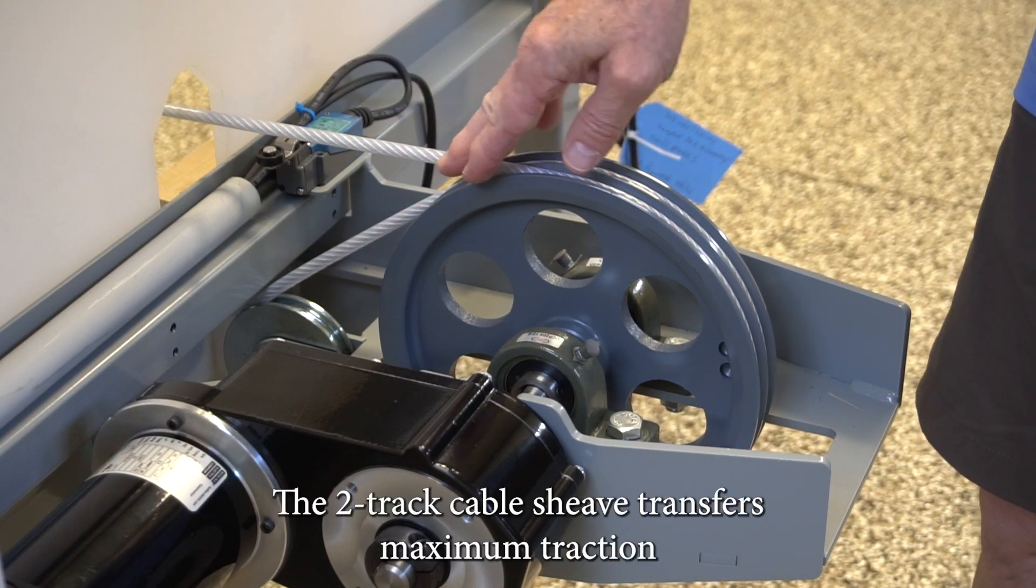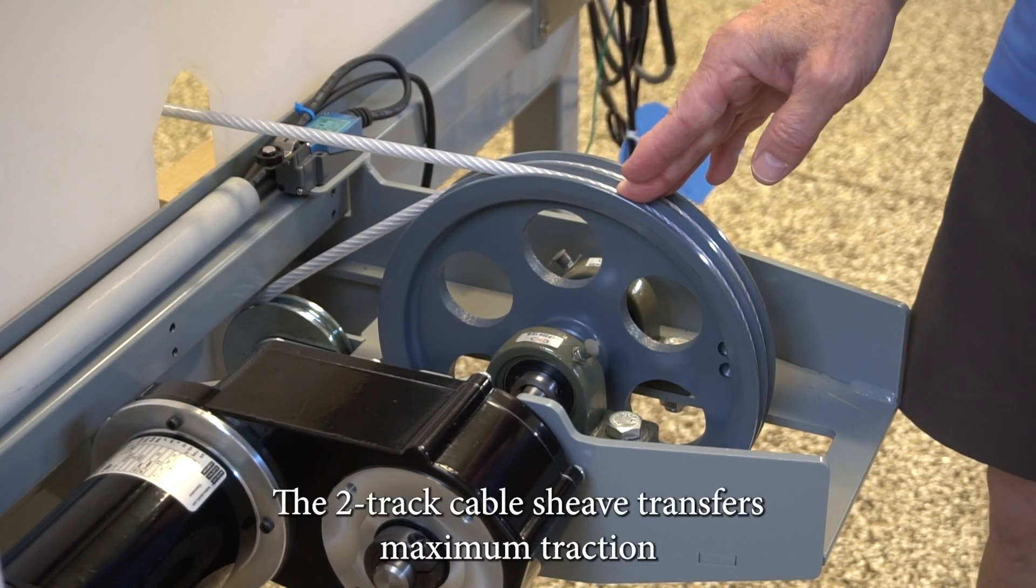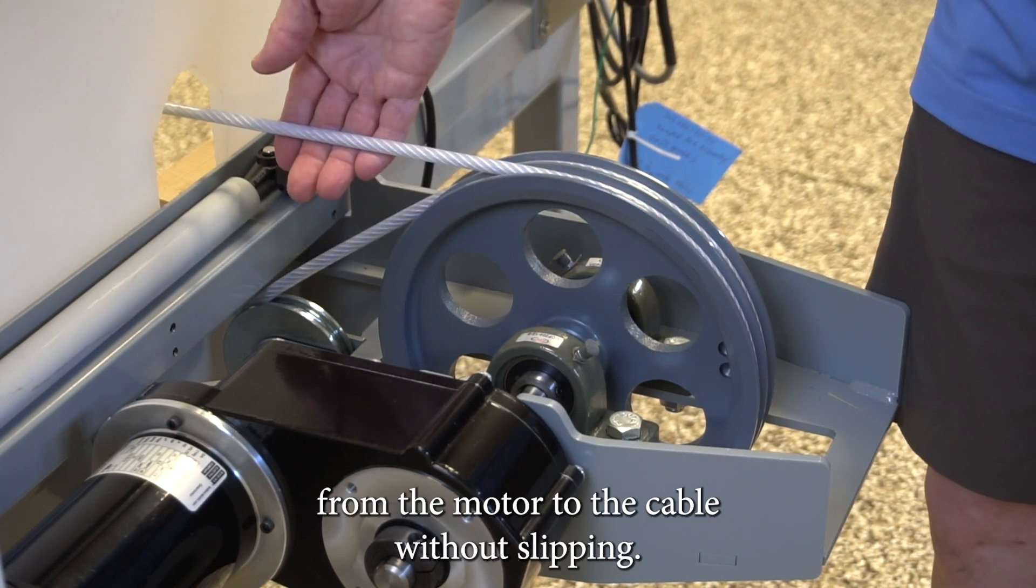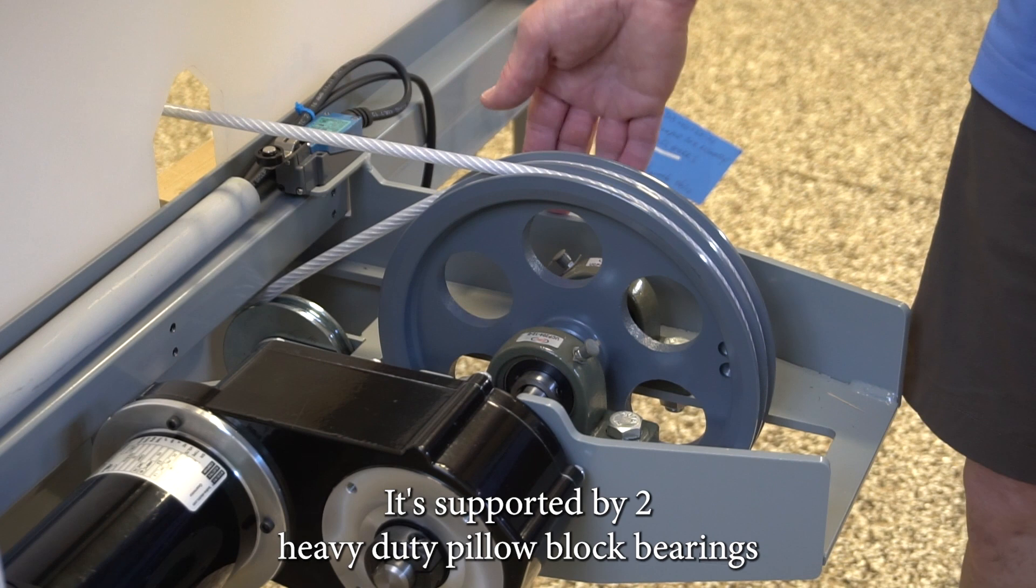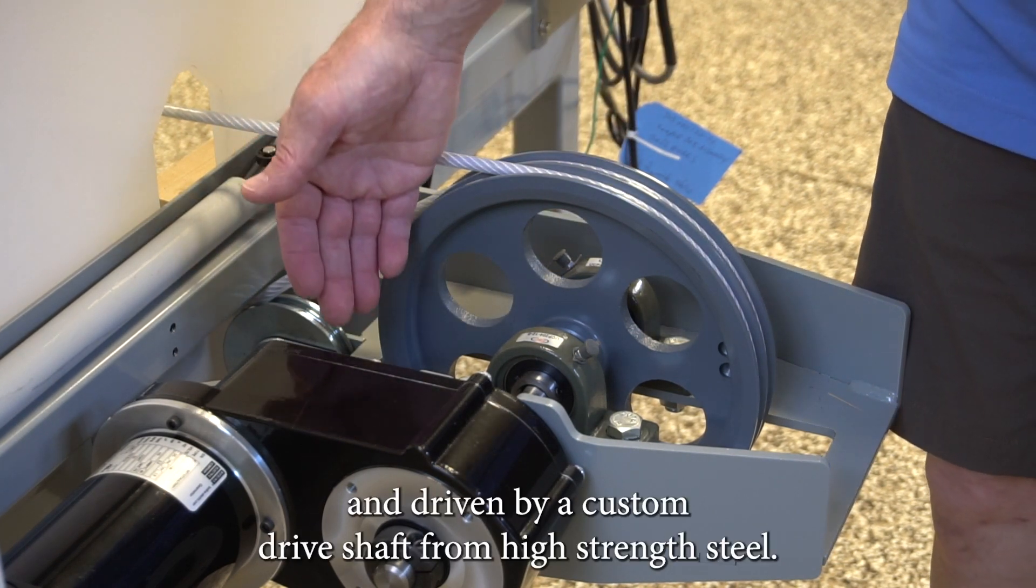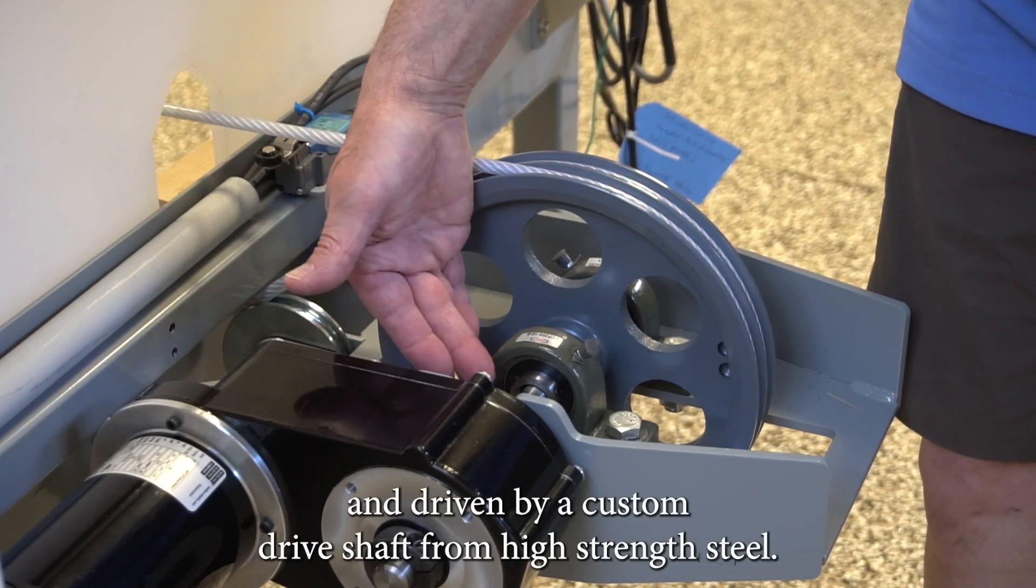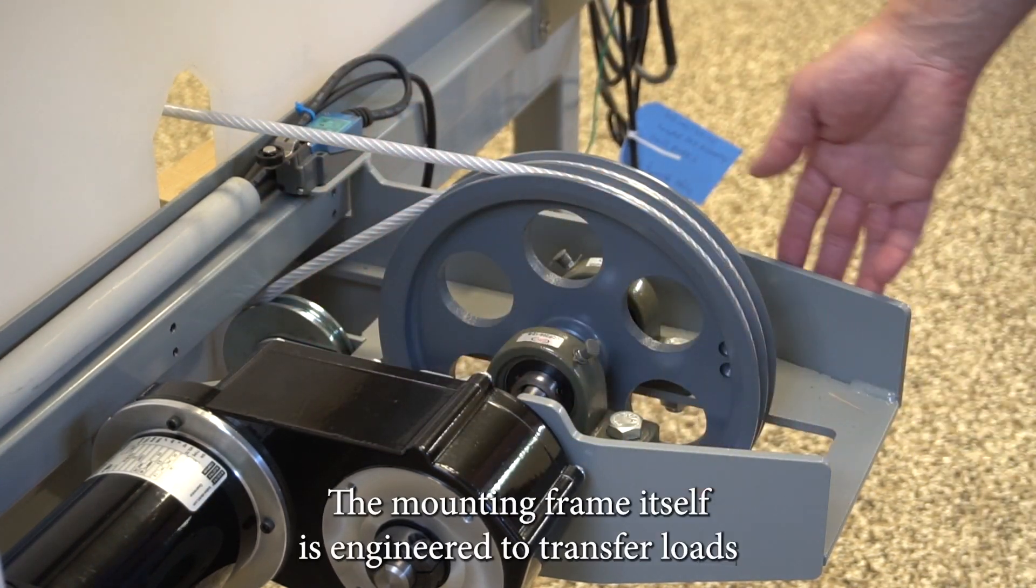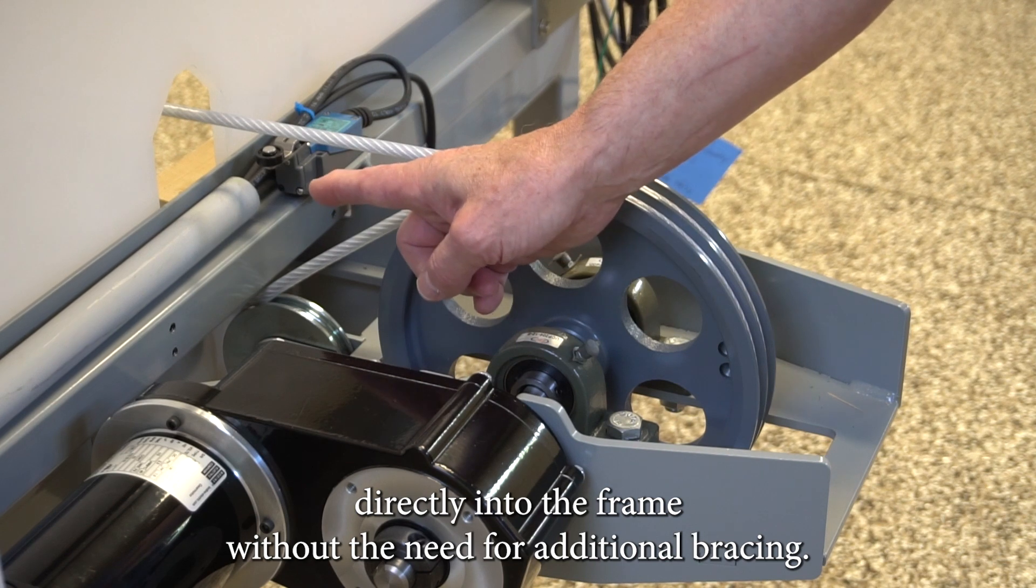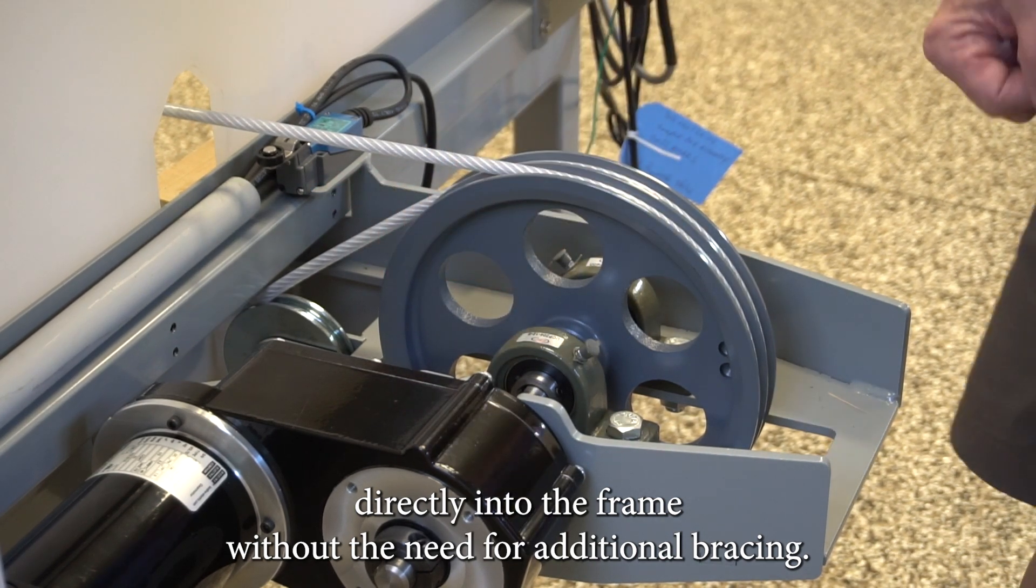The two-track cable shift transfers maximum traction from the motor to the cable without slipping. It's supported by two heavy-duty pillow block bearings and driven by a custom driveshaft from high-strength steel. The mounting frame itself is engineered to transfer loads directly into the frame without the need for additional bracing.